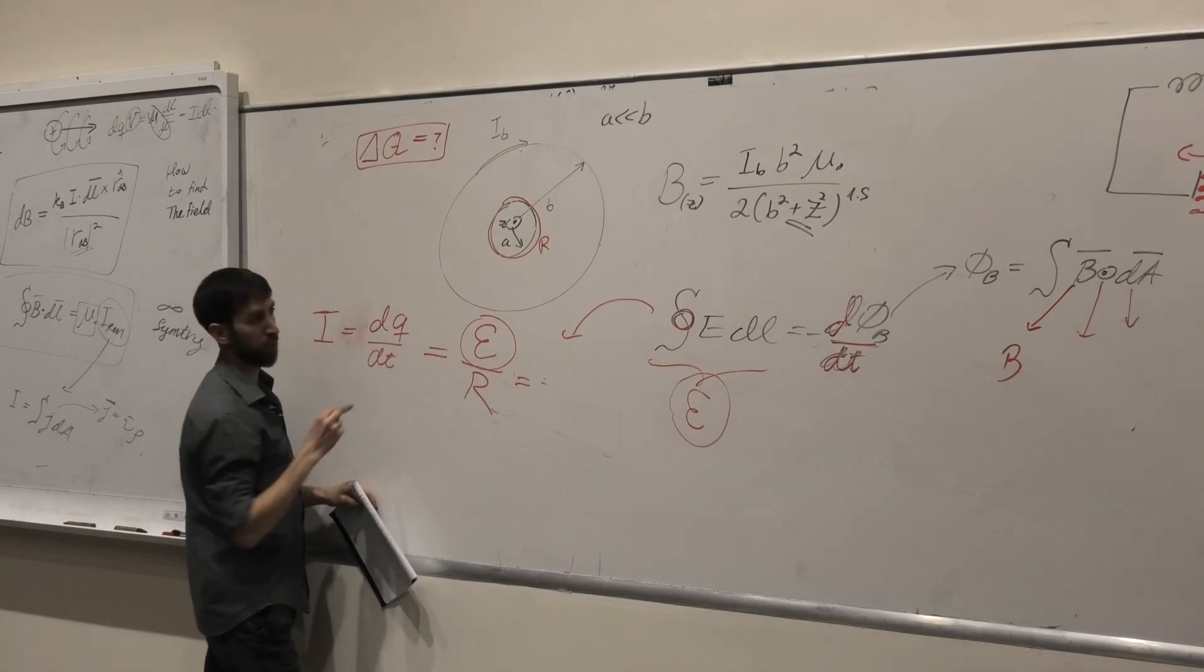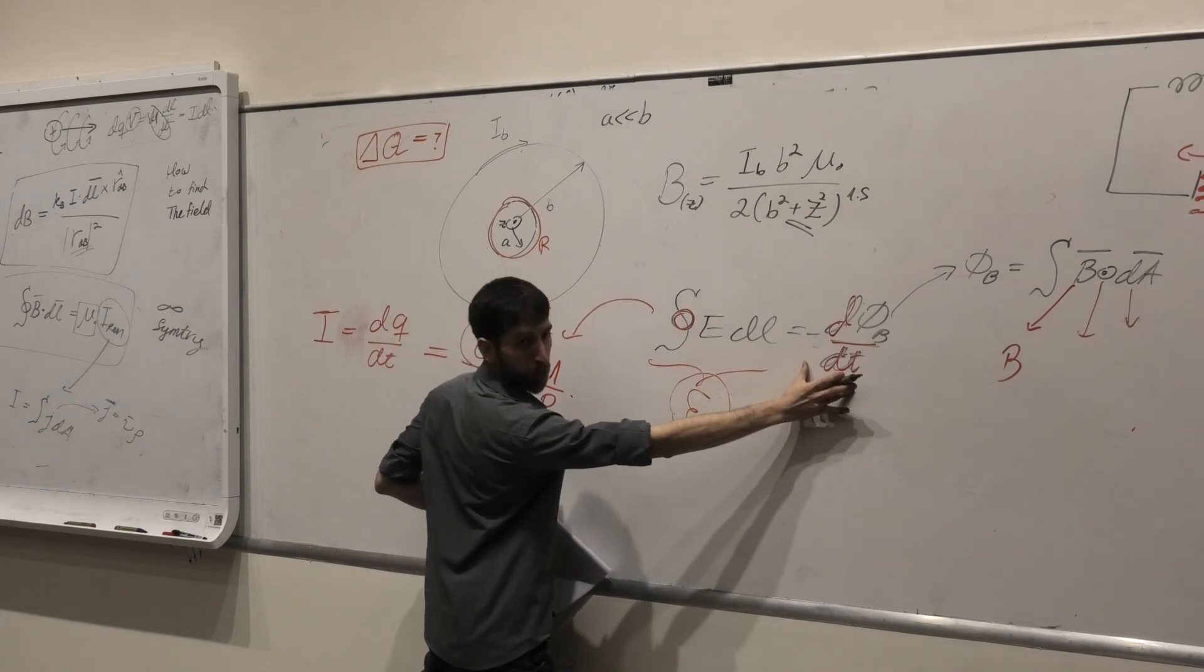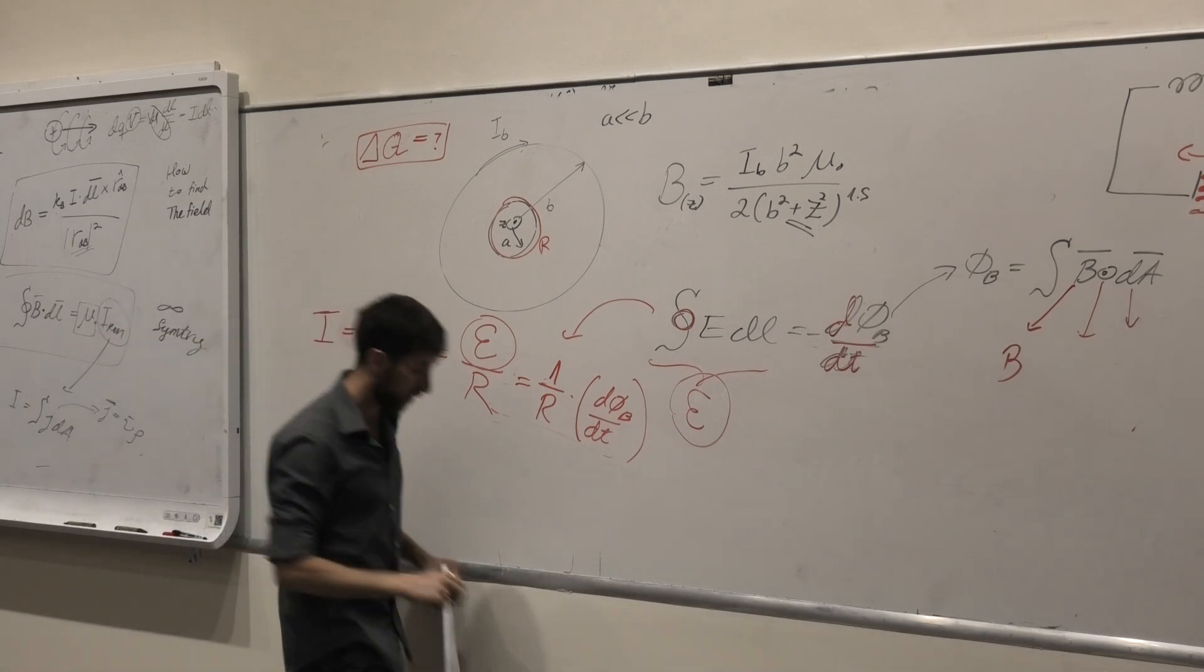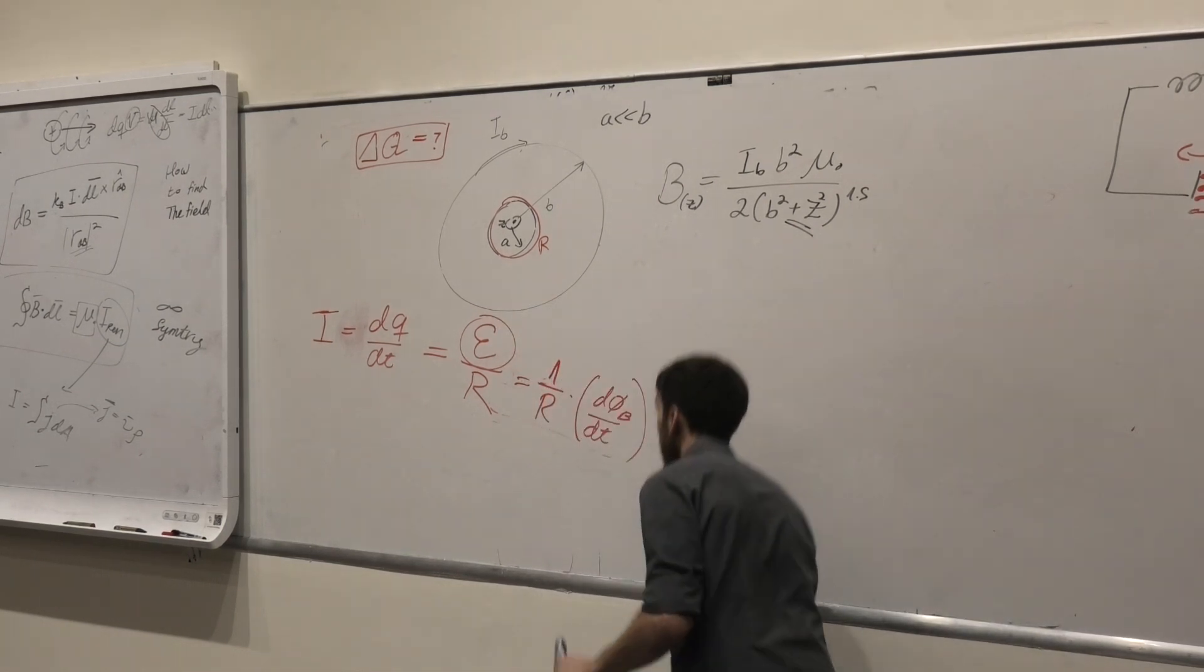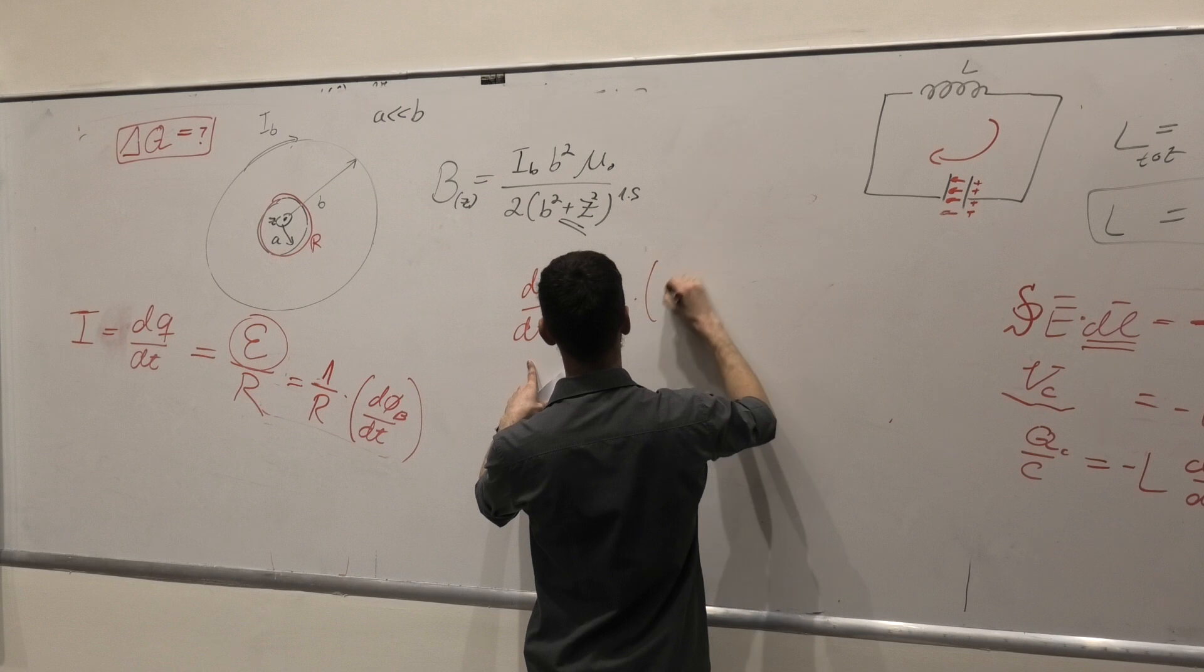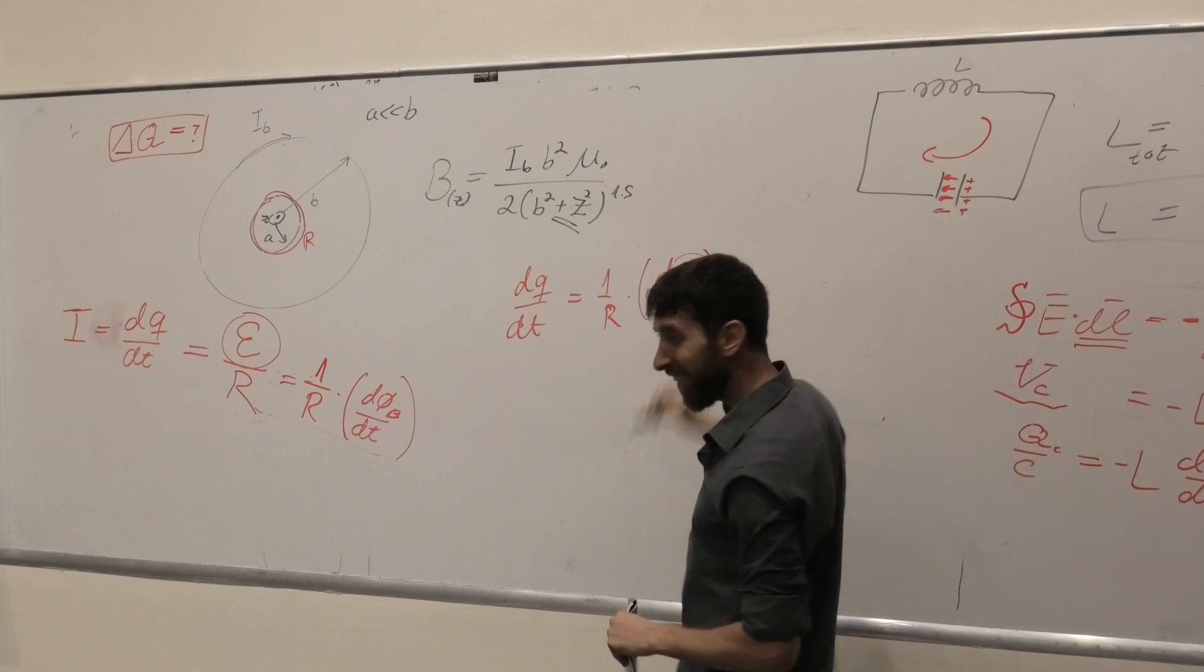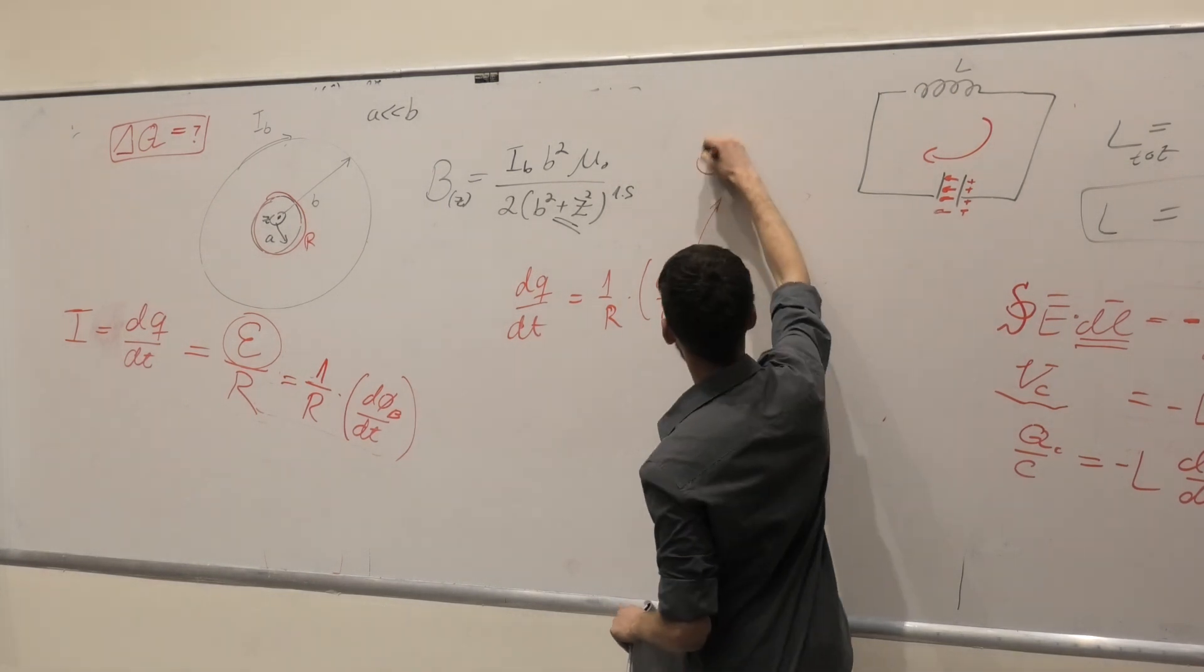So this concept is actually 1 over R multiplied by this term, which is d phi b dt. This concept. I'm going to write what we have. We have dQ dt equal to 1 over R multiplied d phi b dt.